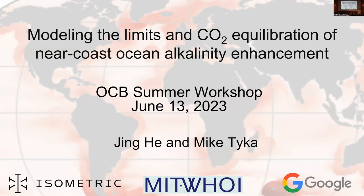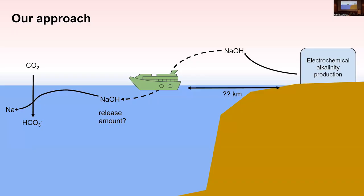Our framework for this study focuses on coastal ocean alkalinity enhancement — from a practical standpoint, because alkalinity production is most likely going to occur on land where we have access to energy and materials. We can imagine a fleet of ships transporting this alkalinity offshore and dispersing it. For the purpose of our study, we're focusing on rapidly dissolving forms of alkalinity, such as NaOH.